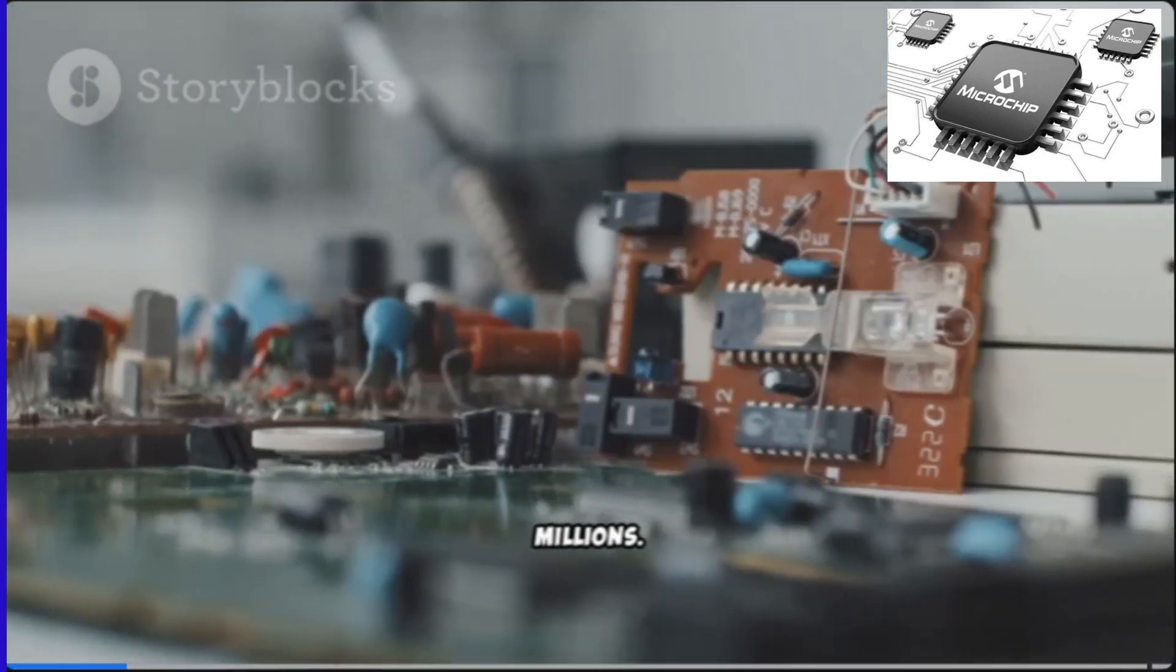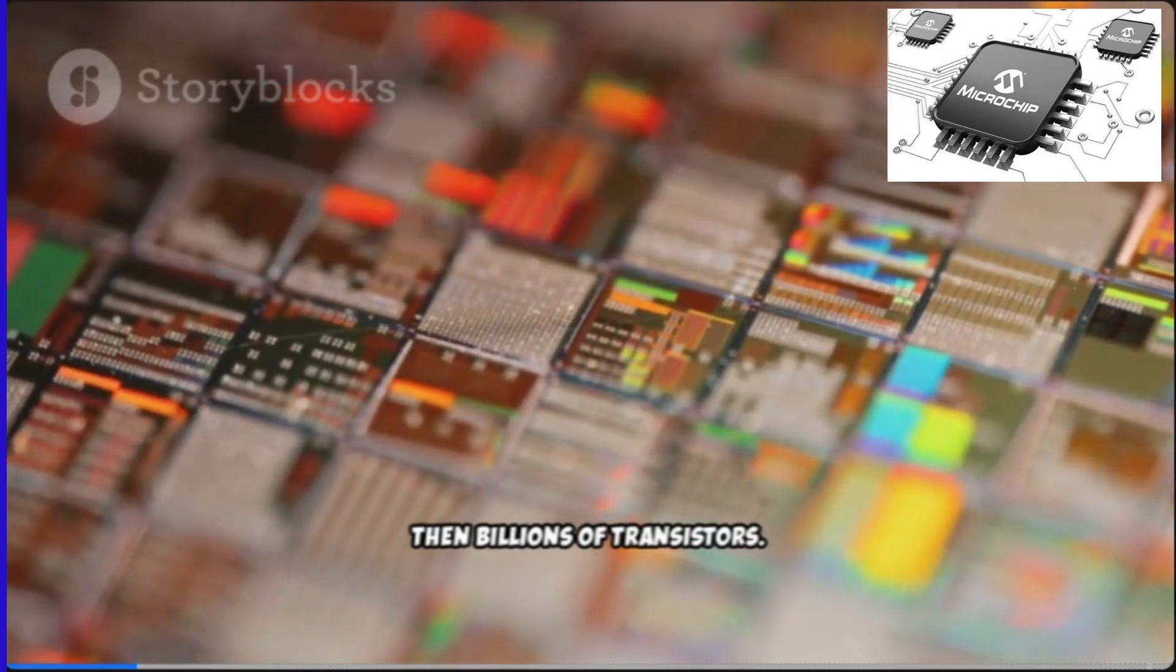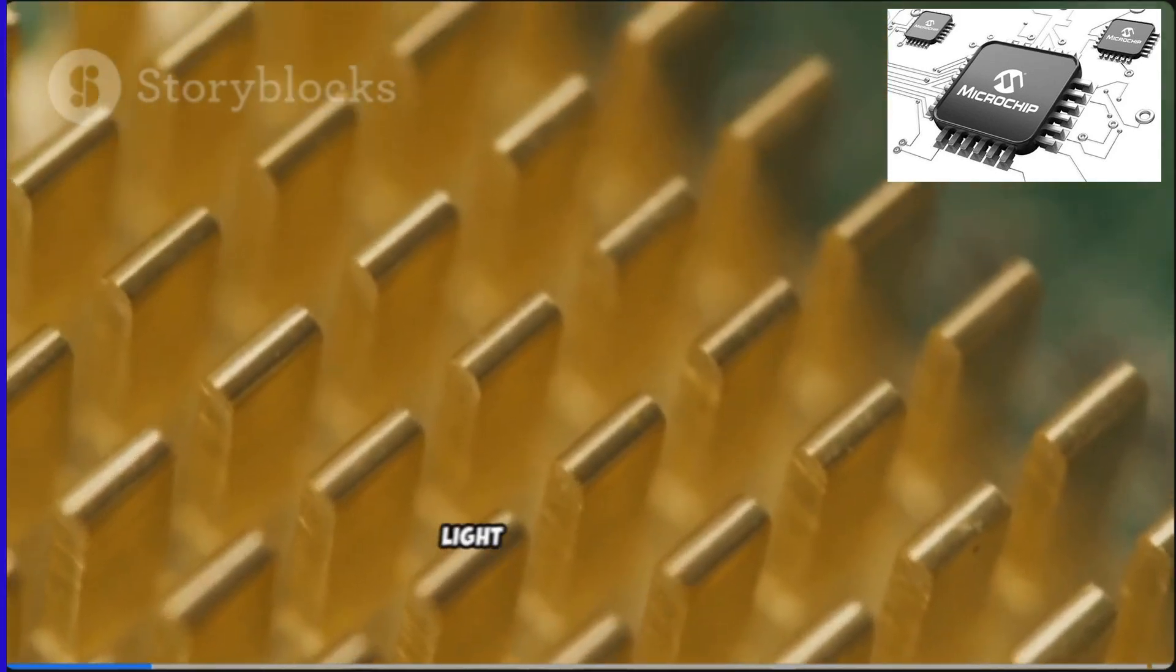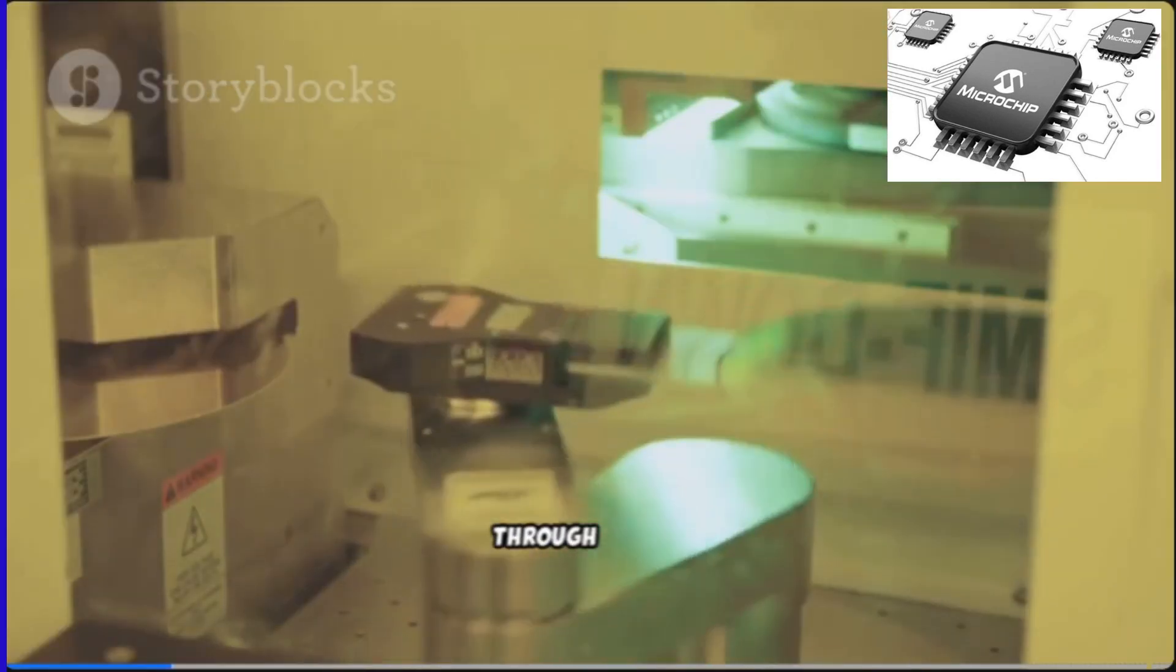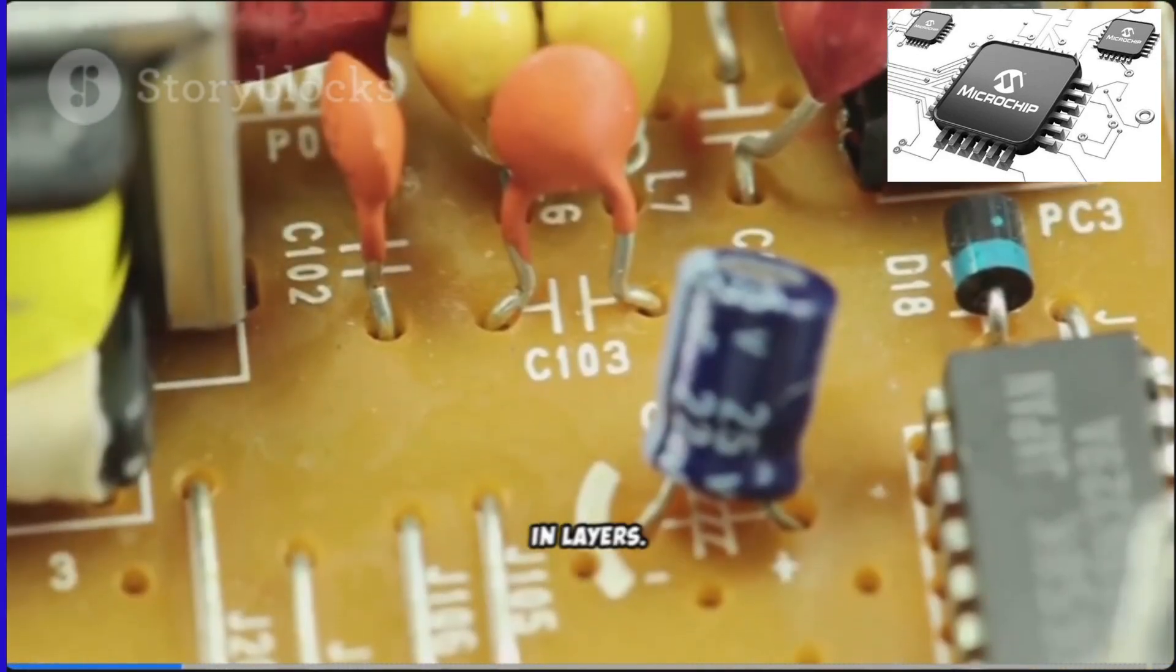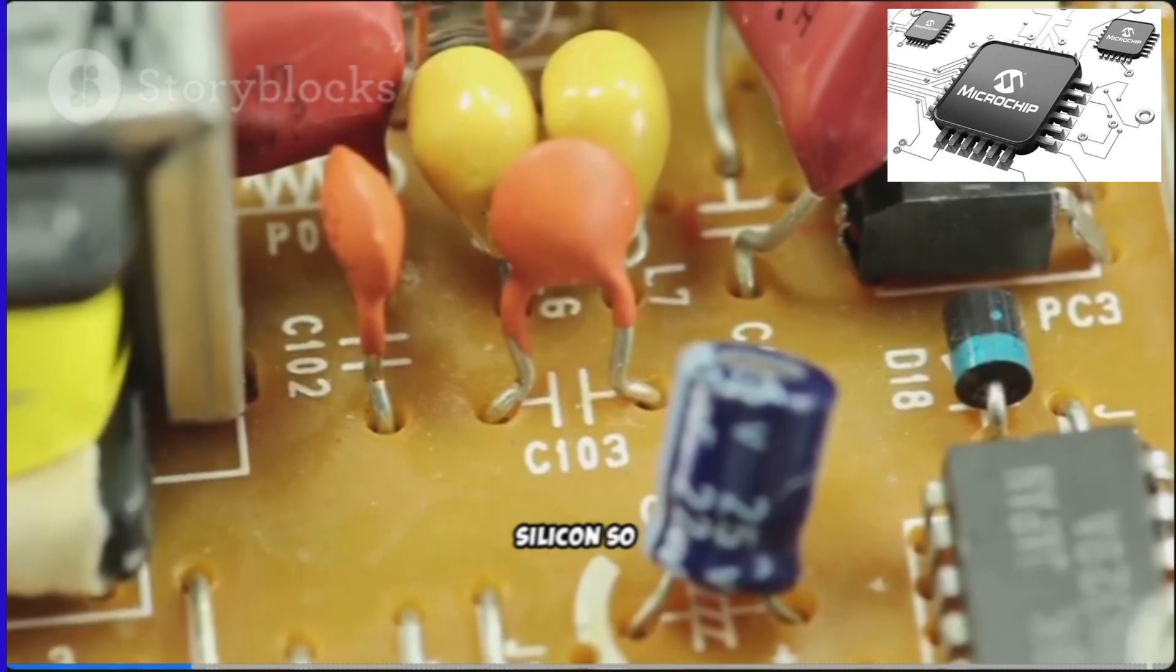Now scale it up. Millions, then billions of transistors etched into silicon. Patterns so tiny, light itself prints them. That's photolithography. You shine light through masks, carve circuits in layers. Doping tweaks the silicon so it conducts just right.